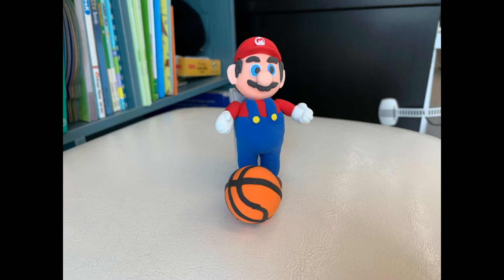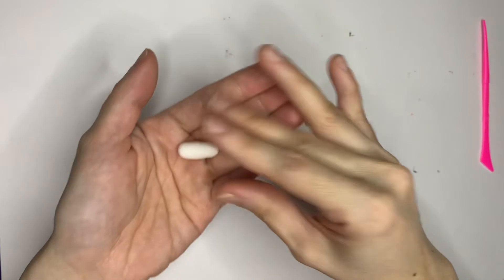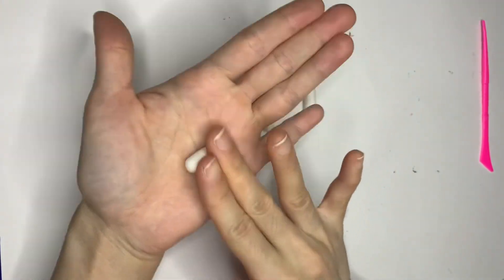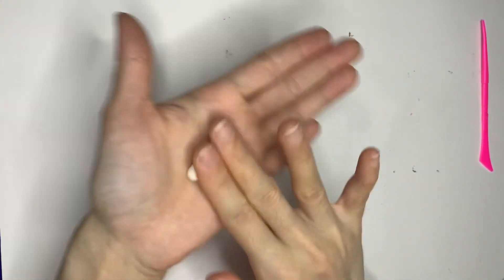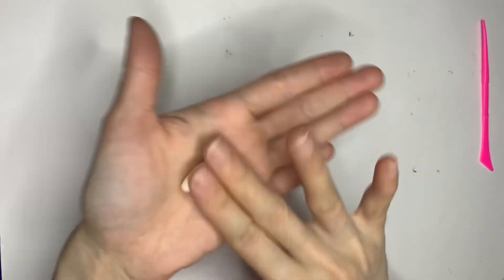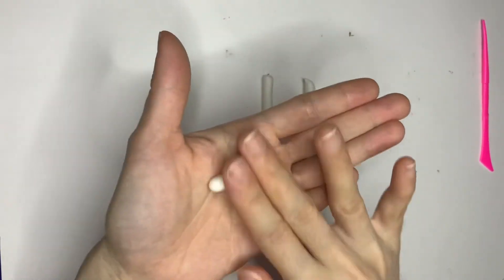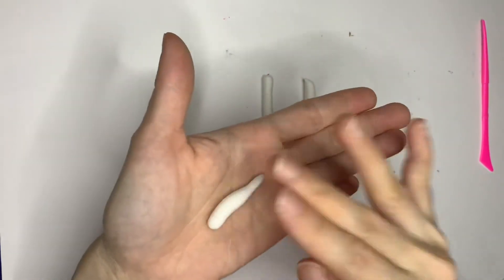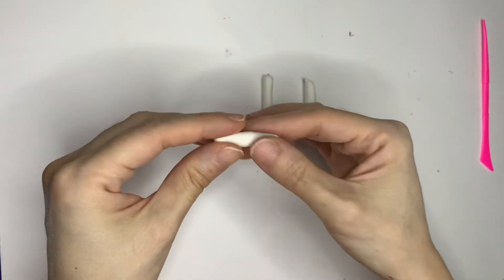Let's make the shuttlecock now. Roll up some cylinder shape and then start to make one end sharper. Then press on it to make it flat.